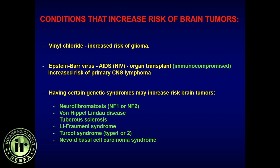Overall, brain tumors are idiopathic, but there are things associated with increased risk: exposure to mining, fluoride, and Epstein-Barr virus. Syndromes like NF1, Von Hippel-Lindau, tuberous sclerosis, Turcot syndrome, and nevoid basal cell carcinoma syndrome predispose patients to a higher incidence of brain tumors.